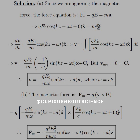Integrating through, we get V = (qE₀/m)(−1/ω) sine(kz − ωt) x-hat plus some constant C. But V average equals zero, so C must equal zero — otherwise, V average would just equal C. Therefore, V = −qE₀/(mω) sine(kz − ωt) x-hat, where ω = ck.